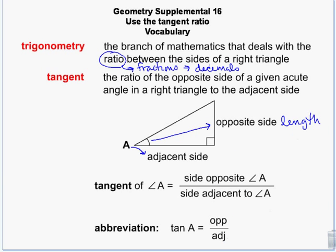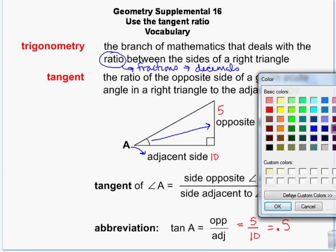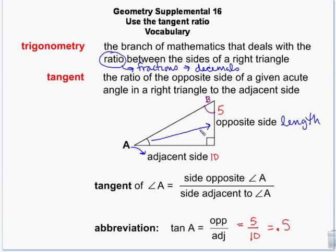If this side was 5 and this was 10, then our trig ratio would be 5 divided by 10, or 0.5, for tangent of A. Now if we bring in another angle B, the numbers switch: this becomes the opposite side and this becomes the adjacent side. So the tangent of B would be 10 over 5. The two angles' tangents are reciprocals of each other, because which side is opposite and which is adjacent depends on which angle you're referencing.